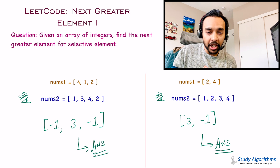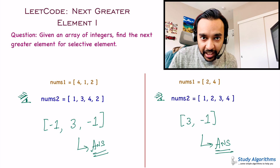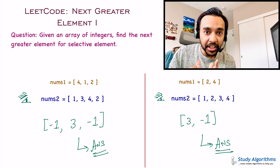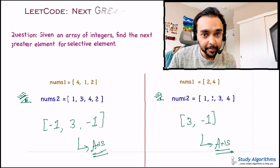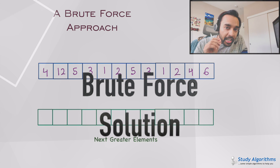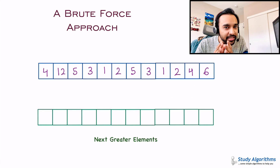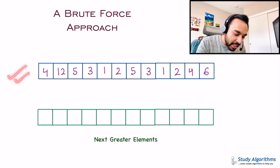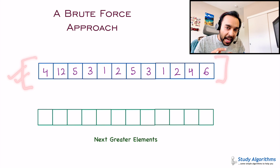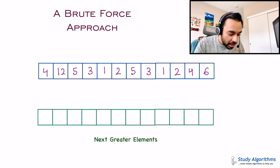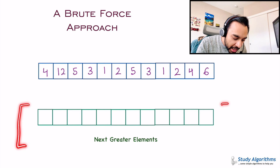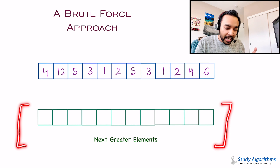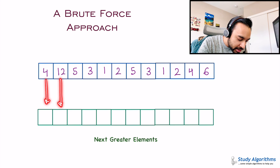Now, if you have understood the problem statement, feel free to try it out. Otherwise, let us see what solution we can come up with. Before solving this question, it is very important to understand the actual meaning of next greater element. Let us take a sample array — this time a very large one — and find the next greater element for all elements. I have this output array in which I will store the next greater element for each corresponding element.